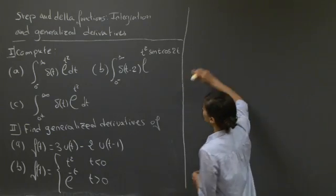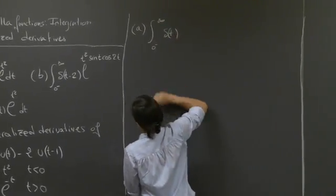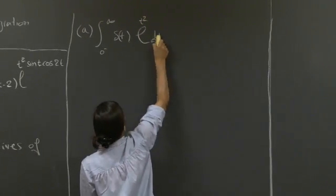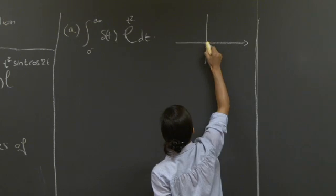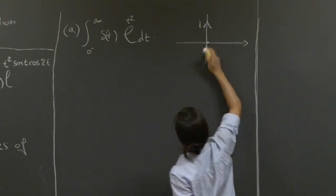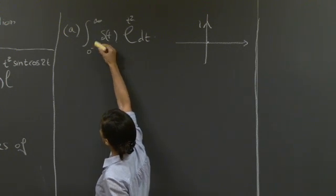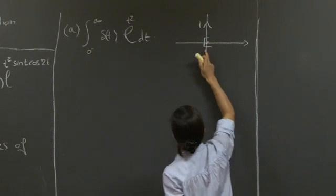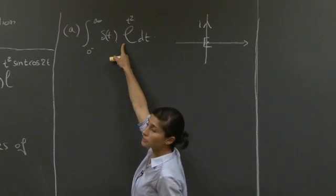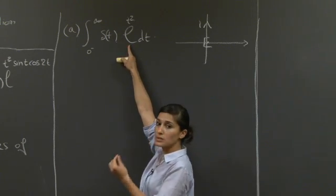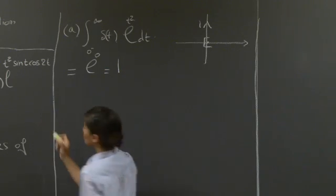Welcome back. Let's compute the first integral: from 0 minus to infinity of δ(t)·e^(t²) dt. The delta function is everywhere 0 except at t = 0, represented with an arrow, and its integral from minus infinity to plus infinity equals 1. Since we're integrating from 0 minus to infinity, the point t = 0 is included in our interval. Therefore, the integral assigns to e^(t²) its value at t = 0, which is e^0 = 1.